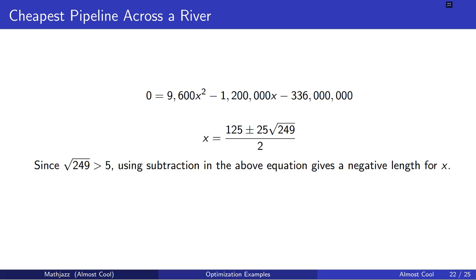Now the square root of 249 is bigger than 5, and 5 times 25 is 125. So 125 minus 25 times the square root of 249 is going to be a negative number and that isn't going to give us a minimum cost.